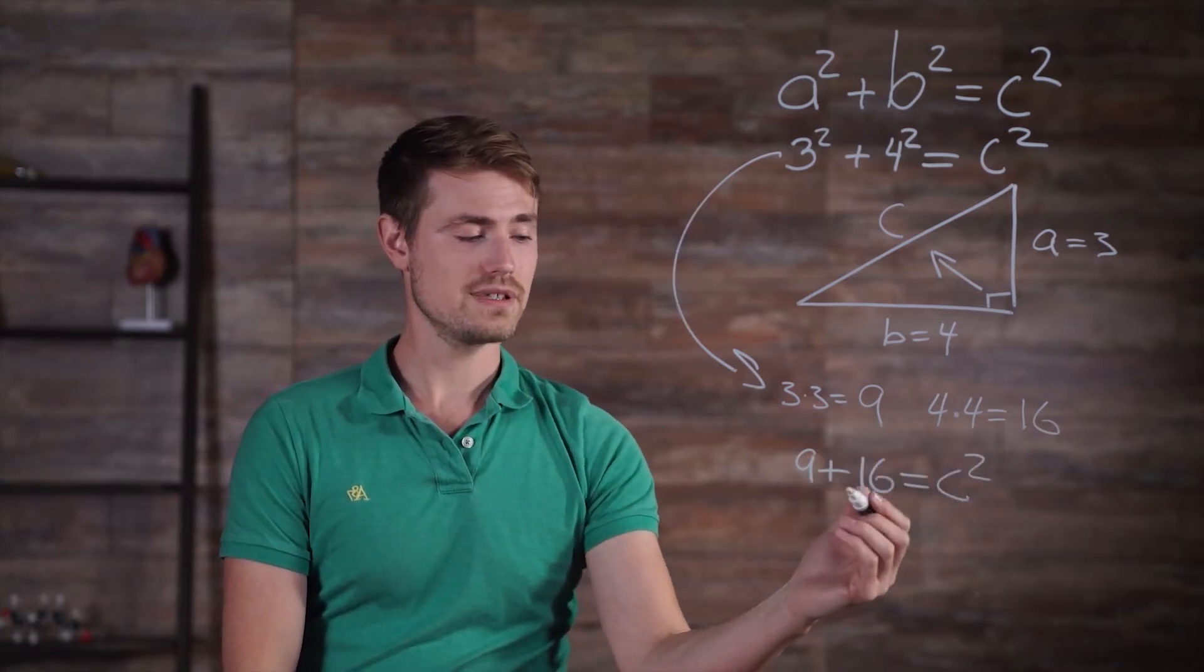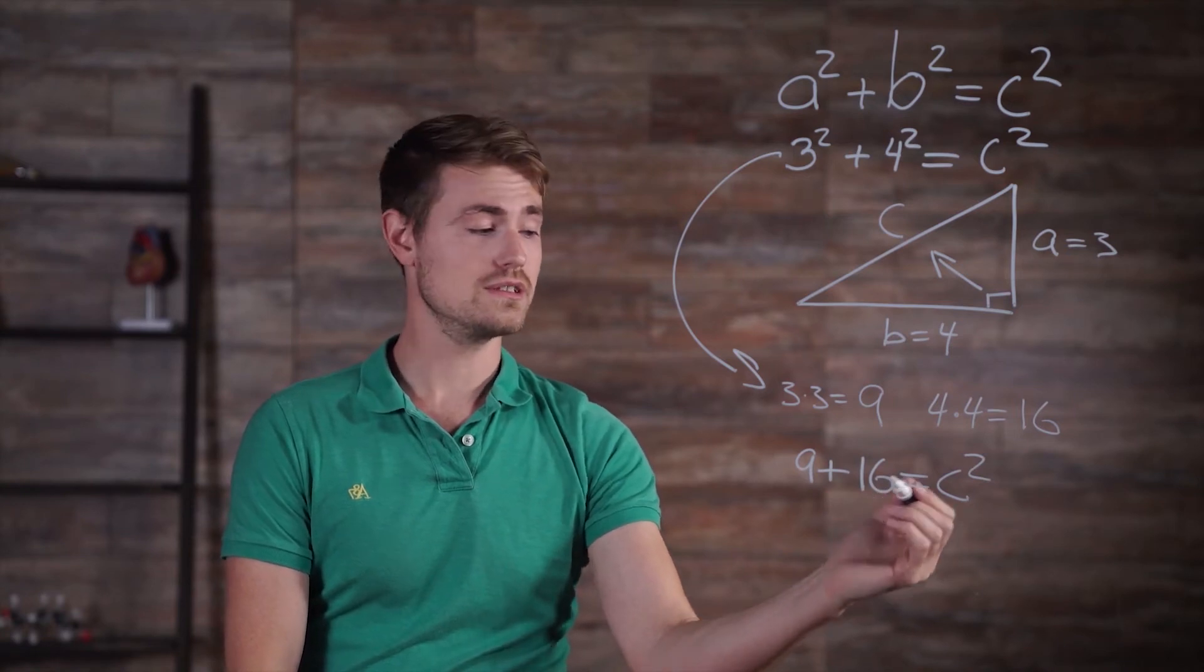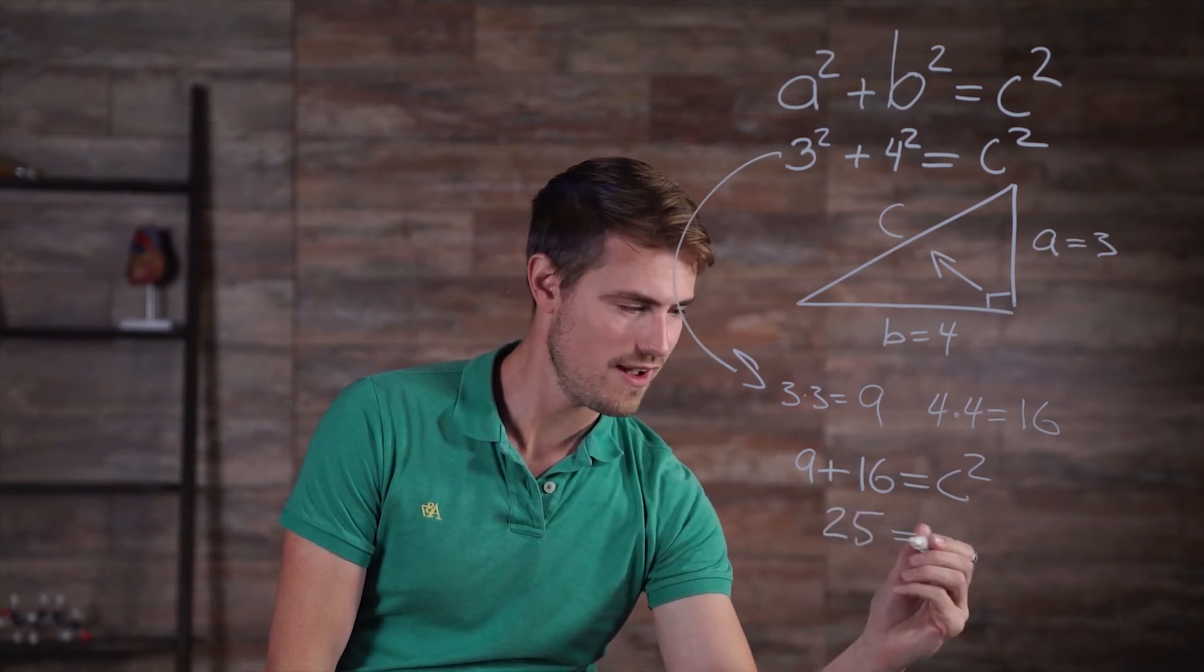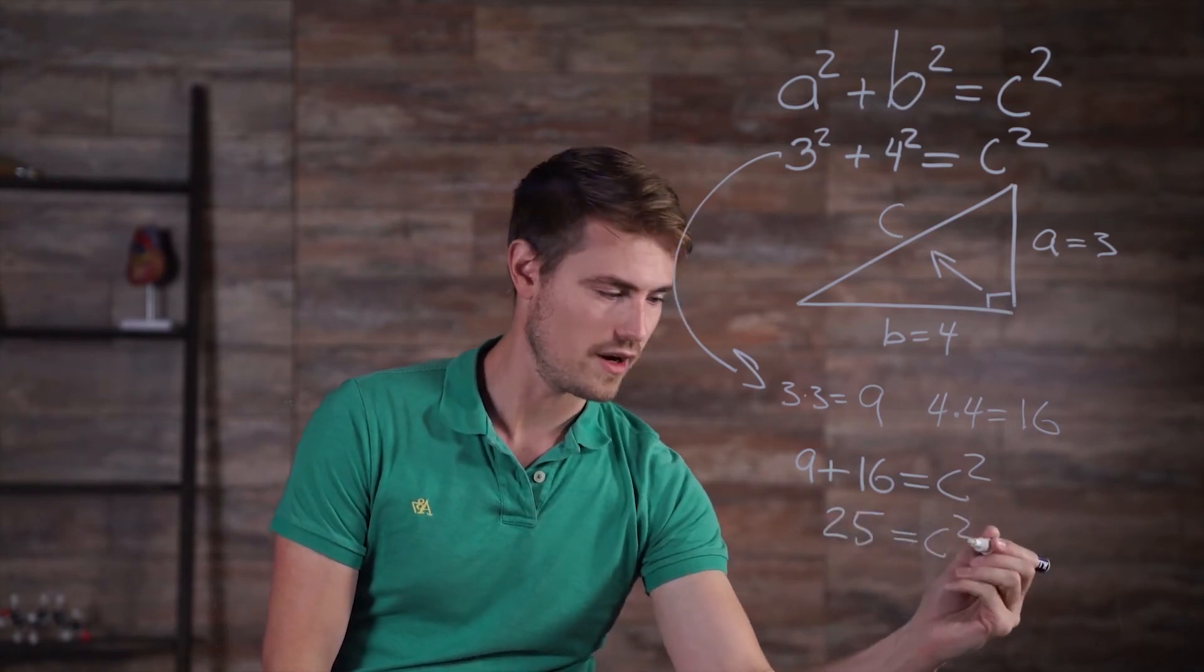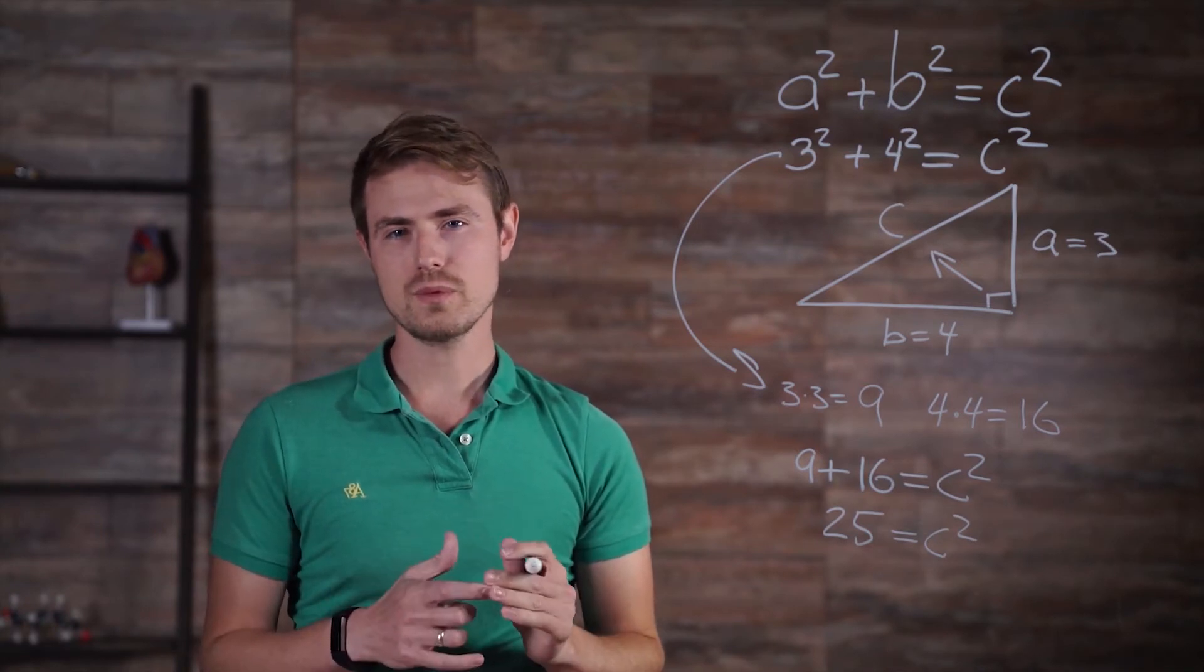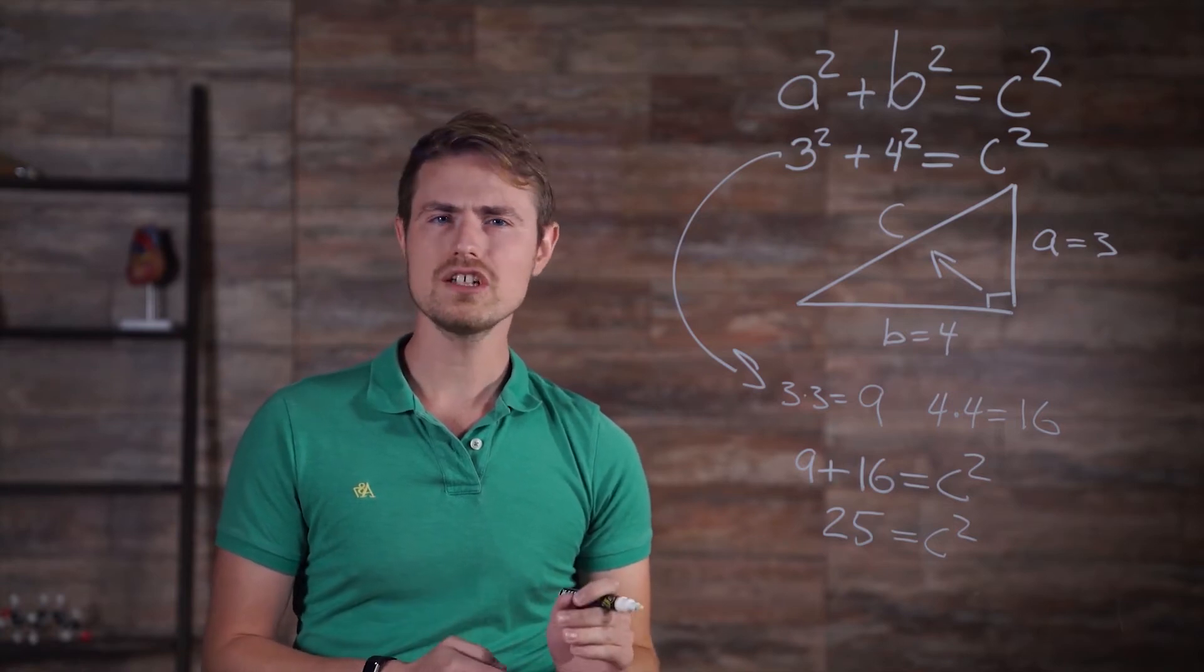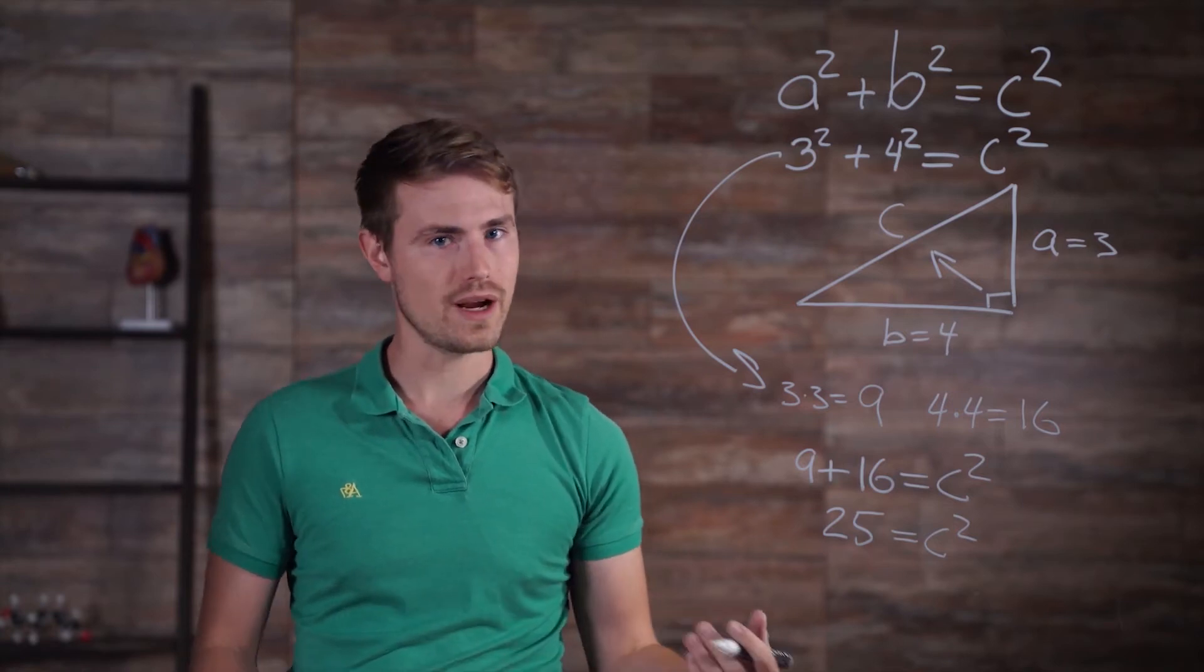So now we have nine plus sixteen is equal to c squared. A little addition tells us twenty-five is equal to c squared. Now, here's where it gets a little tricky. We know that c squared is equal to twenty-five, but we want to know what c is, not what c squared is.